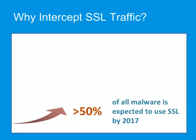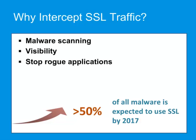By intercepting SSL traffic, you can scan SSL encrypted traffic for viruses, worms, and trojans, and stop them at the gateway. Eliminate the SSL blind spot, gaining visibility and control over SSL encrypted traffic. Stop rogue applications, such as IM and P2P, that use SSL to subvert enterprise controls and security measures.